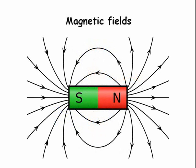A bar magnet is a good example of a magnetic field. You have lines of force going between the north and south poles of the bar magnet.